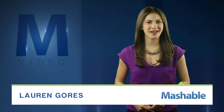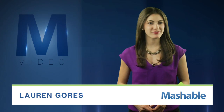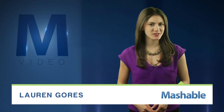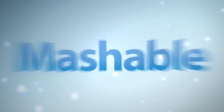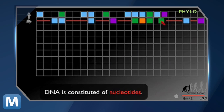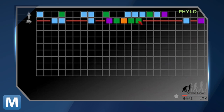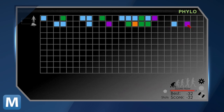A report from science journal PLOS One shows online game Phylo has helped to unravel a complex problem. The game was created to help solve a problem in computing multiple sequence alignments. Here's how it works.